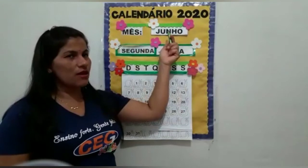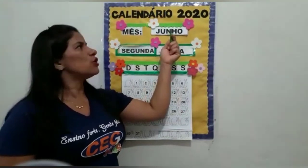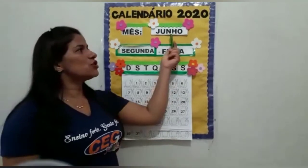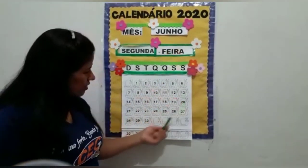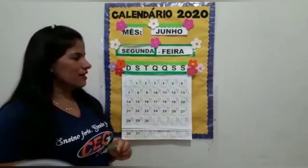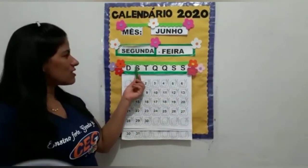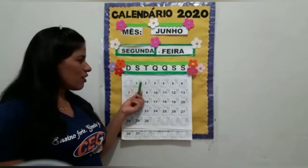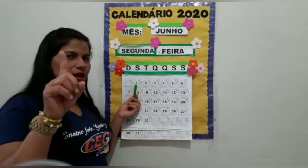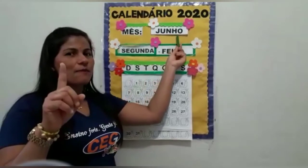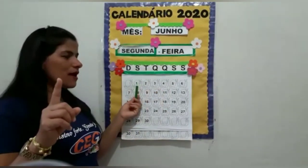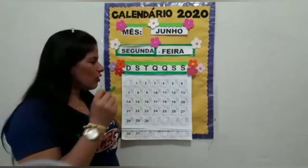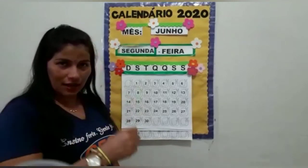Depois do mês de maio vem o mês de junho. Vamos falar esse nome? Junho. Mês que nós estamos? Junho. E olha quantos dias nós temos no mês de junho, que legal! Nossa semana de aula começa na segunda-feira, e olha só — é o primeiro dia deste mês, o mês de junho. Primeiro de junho. Vamos, então, iniciar colorindo o nosso calendário, o nosso caracol. Vamos lá?